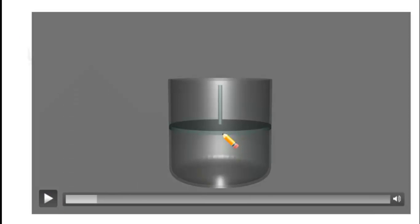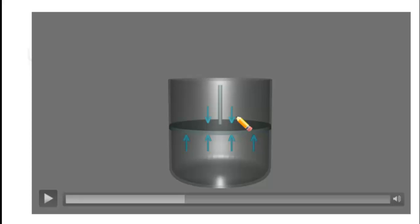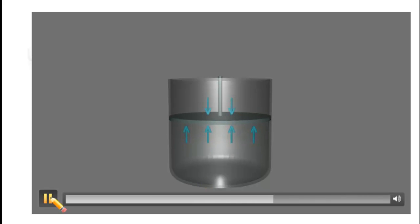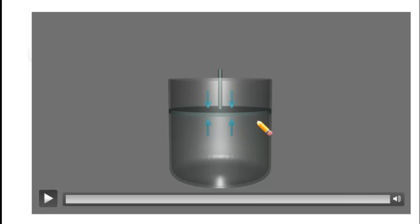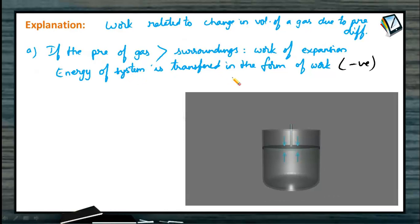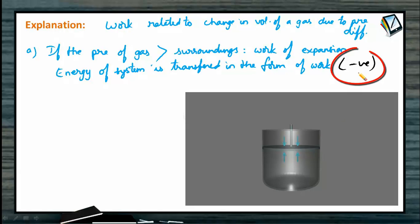Consider a vessel fitted with a weightless, frictionless piston. The pressure exerted by the gas inside the vessel is greater than the external pressure. Work of expansion is done by the gaseous system on the surroundings. The piston will move upward until the pressure of the gas becomes equal to the pressure of the surroundings. The energy of the system is transferred in the form of work into the surroundings, and that work done by the system is taken as a negative value.